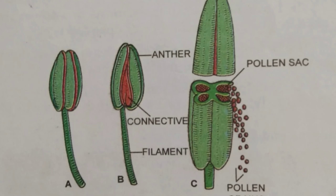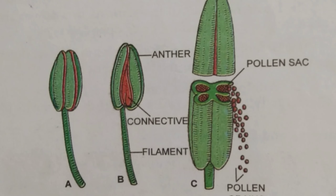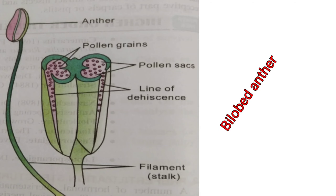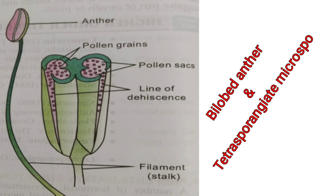The pollen sac is where microspores or pollen grains are produced. These microspores later form the male gametophyte through a process called male gametogenesis or microgametogenesis, producing two male gametes. The pollen sac is also called the microsporangium, and within the microsporangium the microspores or male spores are formed. After maturity, the pollen grains are liberated by rupturing the wall of the microsporangium and are disseminated into the wind, after which pollination occurs.